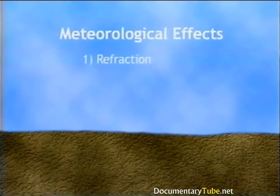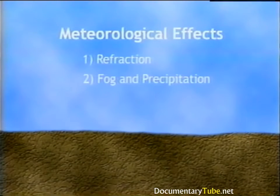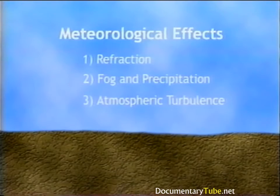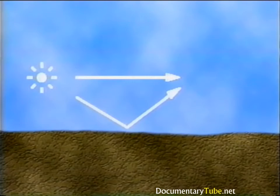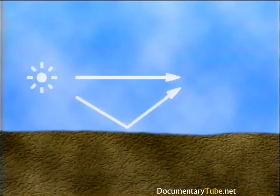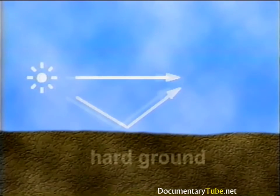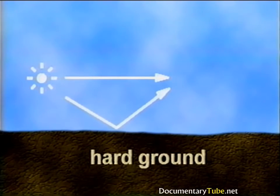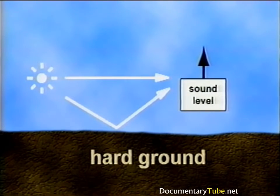Effects of fog and precipitation are generally negligible. Atmospheric turbulence from moving vehicles or heated pavement could cause fluctuations in received sound levels or reduce soft ground attenuation. Regarding ground reflections: the ground-reflected wave can interfere with the direct wave to produce a net increase or decrease in SPL. An acoustically hard ground such as asphalt or water produces a 1 to 2 dB increase for the first and second row residences adjacent to the highway.